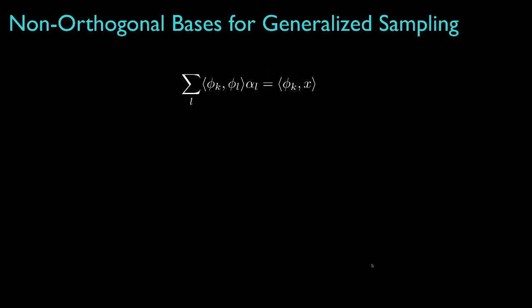In all practical applications, we'll typically restrict the sampling to a finite set of coefficients and basis functions. This will allow us to find the sampling coefficients as the solution of a system of linear equations, where the elements of the vector alpha are the sampling coefficients, the elements of the vector x are the inner products between the basis functions and the signal, and the elements of the matrix H are the inner products between the basis functions.